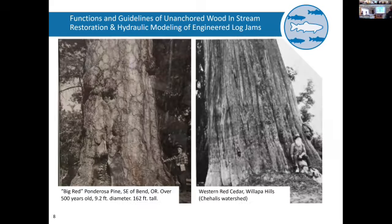Just a couple more examples: some of the big ponderosa here in Oregon, a big red cedar in Willapa. There was actually a red cedar — we have a 1906 account in the lower area from a government survey that was 27 feet in diameter, which is just a couple of feet shy of the giant sequoia General Sherman. Most of our big trees are gone.